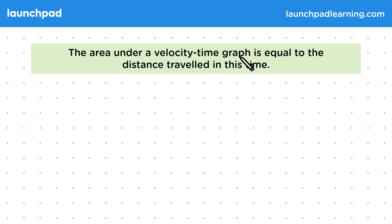The area under a velocity-time graph is equal to the distance travelled in this time. Remember that a velocity-time graph shows us what the velocity of an object is at each point in time, with its gradient telling us its acceleration.